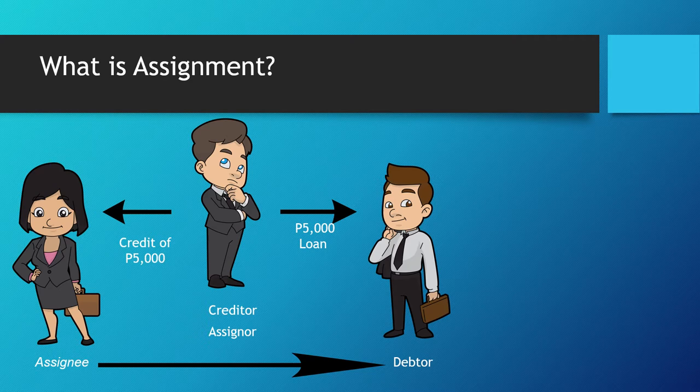Assignment may be done gratuitously or onerously. An onerous assignment, such as when Jane buys the credit for $4,000, has the effect similar to that of a sale. As a consequence, the third party steps into the shoes of the original creditor, as subrogee of the latter.